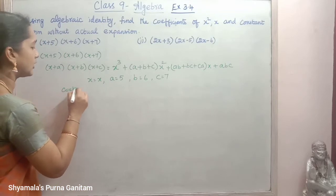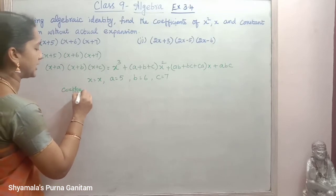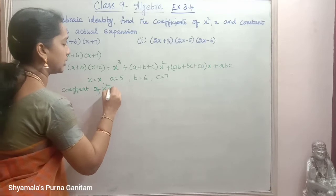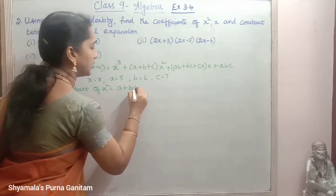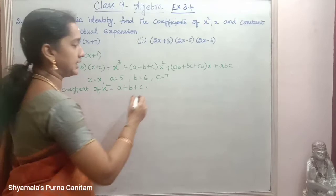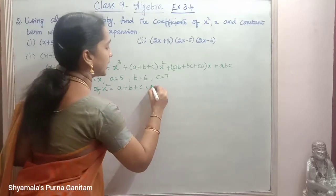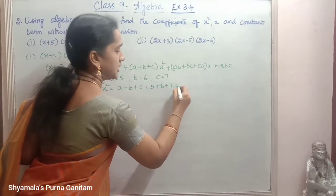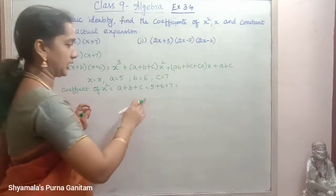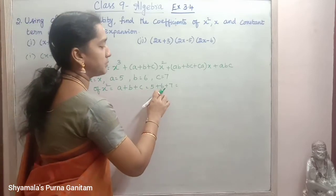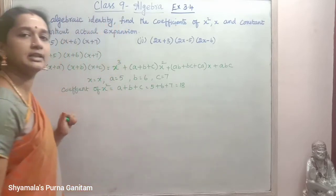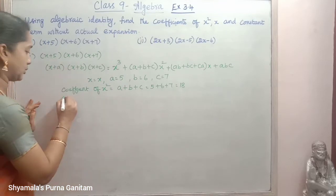Coefficient of x squared is a+b+c. We got the values a, b, c as 5, 6, 7. So 5 plus 6 plus 7: 5 plus 6 is 11, 11 plus 7 is 18. So 18 is the coefficient of x squared.